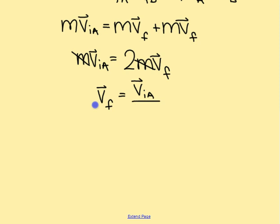Solving for V-final, we find it is half of the initial velocity. The initial velocity was 2.2 meters per second, so the final velocity is 1.1 meters per second.